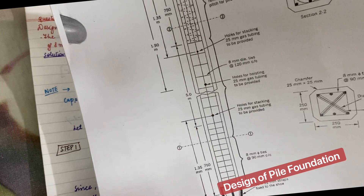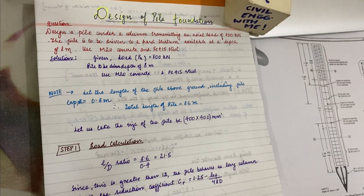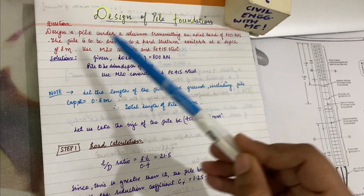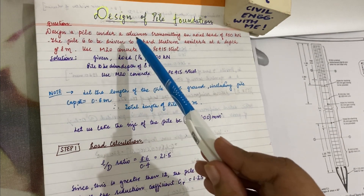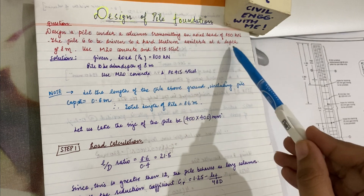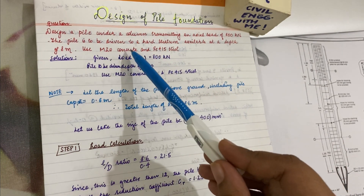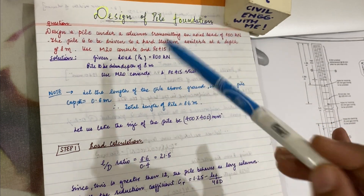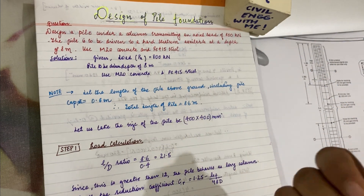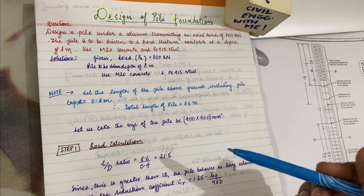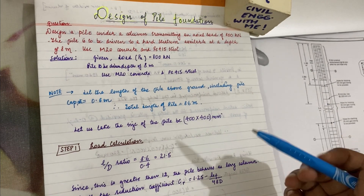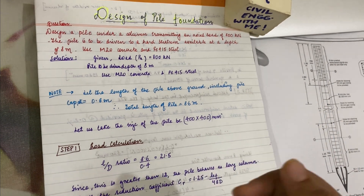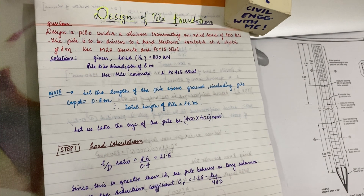The numerical problem: design a pile under a column transmitting an axial load of 800 kN. The pile is to be driven to a hard stratum available at a depth of 8 meters. Use M20 concrete grade and Fe415 steel. This is the design problem — we have to design one of the piles over which a column is transmitting an axial load of 800 kN.